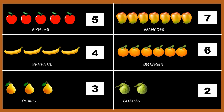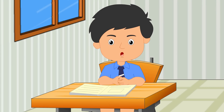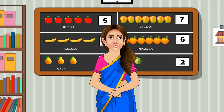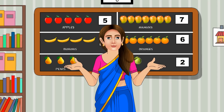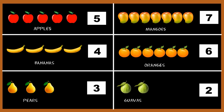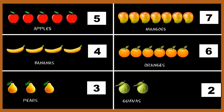Now look at the different types of fruits on the screen. Children, tell me how many types of fruits are there? Madam, there are six types of fruits. Correct. There are apples, mangoes, bananas, oranges, pears and guavas.